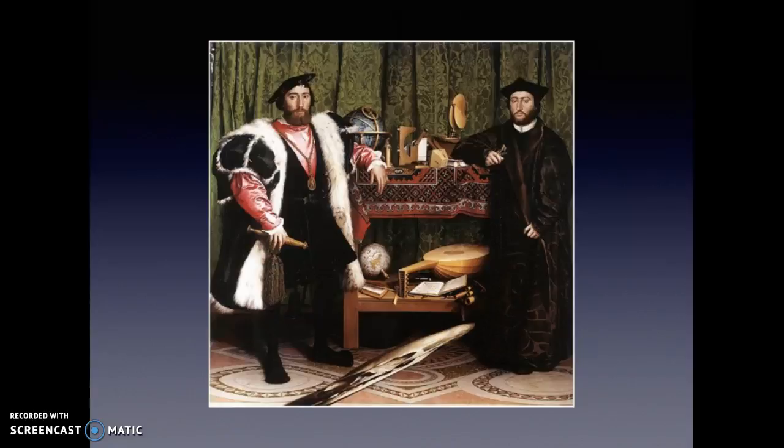This is from 1533, and it's best known for the anamorphic image of the skull, which is in the foreground of the painting right here. When you give a deeper look, this has allegorical elements inside of it. So that's what we're going to talk about today — an in-depth analysis of Holbein's The Ambassadors.